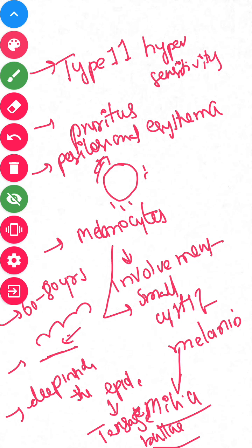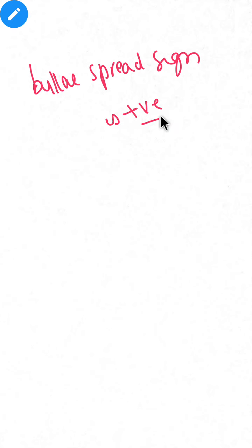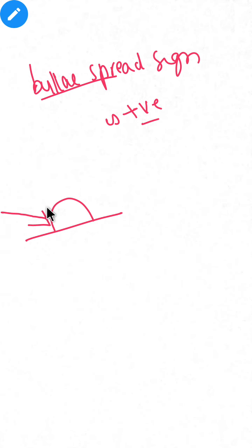One important thing to remember is that the bulla spread sign is positive in bullous pemphigoid. When pressure is applied either tangentially or perpendicularly on the bulla, the bulla moves forward — this movement is called the bulla spread sign, and it is positive in bullous pemphigoid.